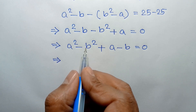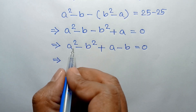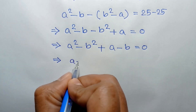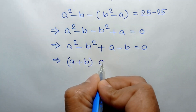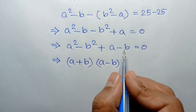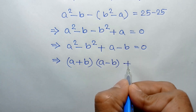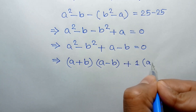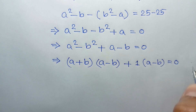Applying the formula A squared minus B squared equals A plus B times A minus B, we can write: A plus B times A minus B, and taking common plus 1 from the last two terms, we get plus 1 times A minus B is equal to 0.